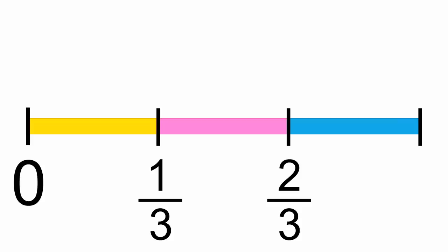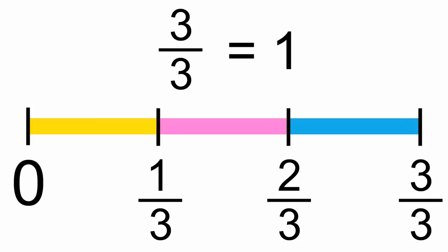These are thirds. Now let's count 0, 1 third, 2 thirds, 1. Or we could say three-thirds. Three-thirds and 1 are the same number.